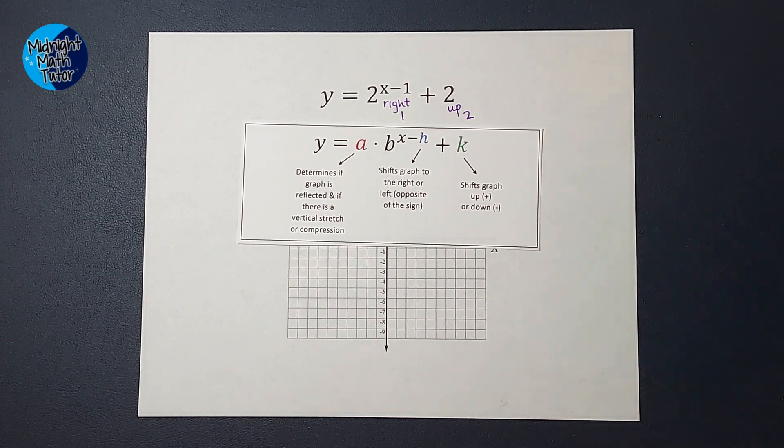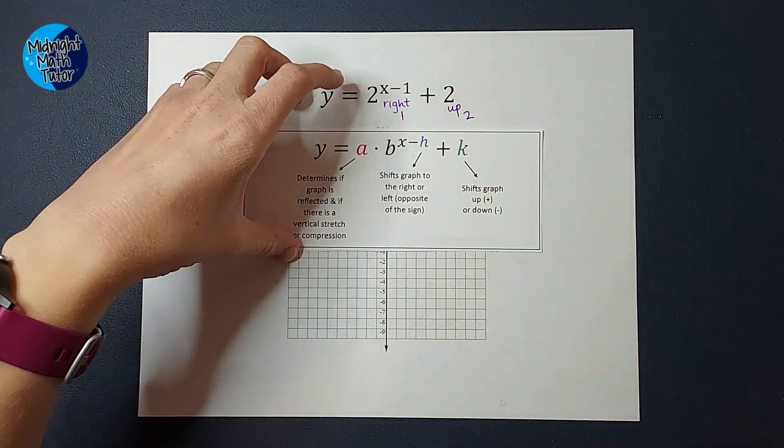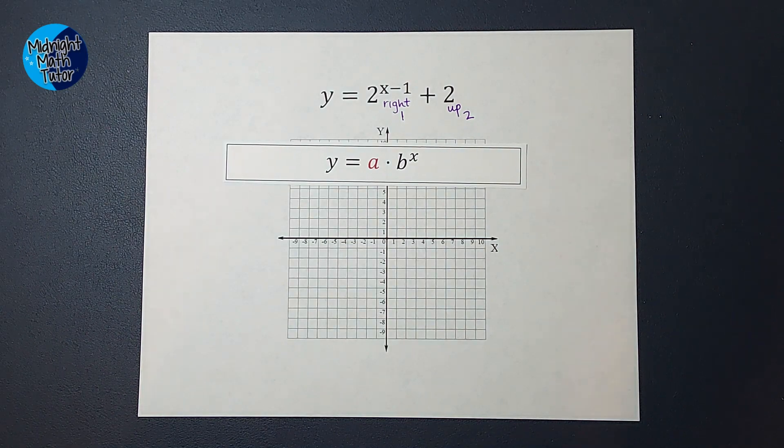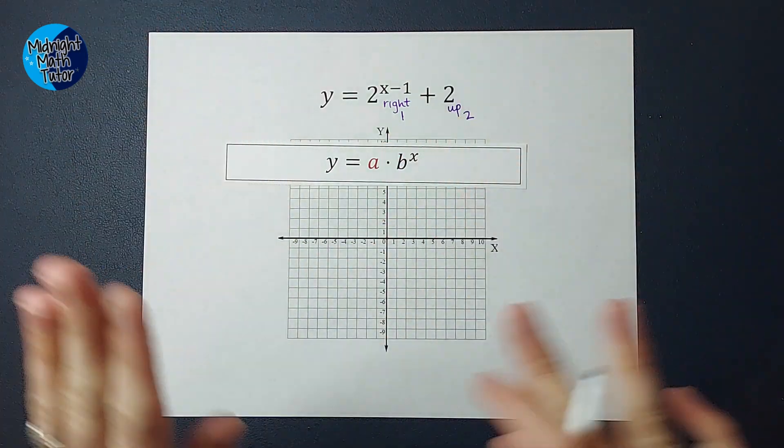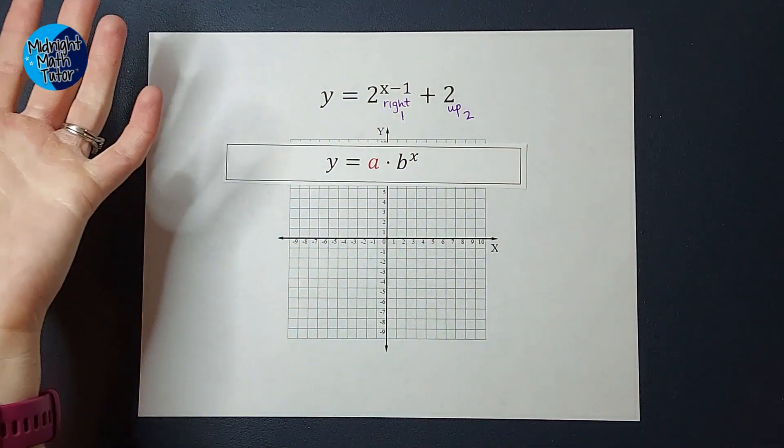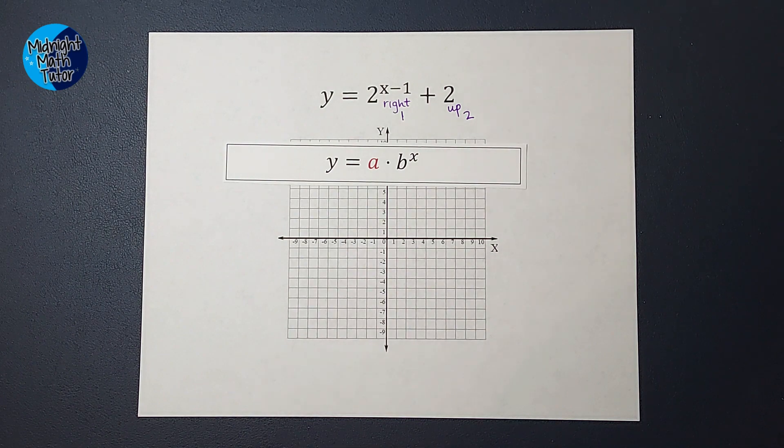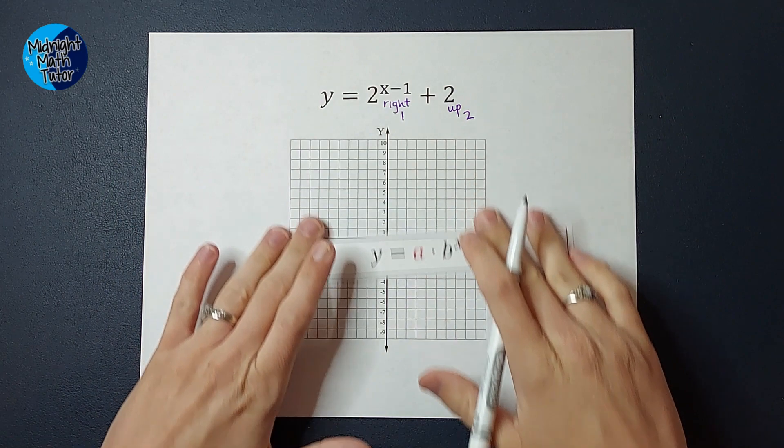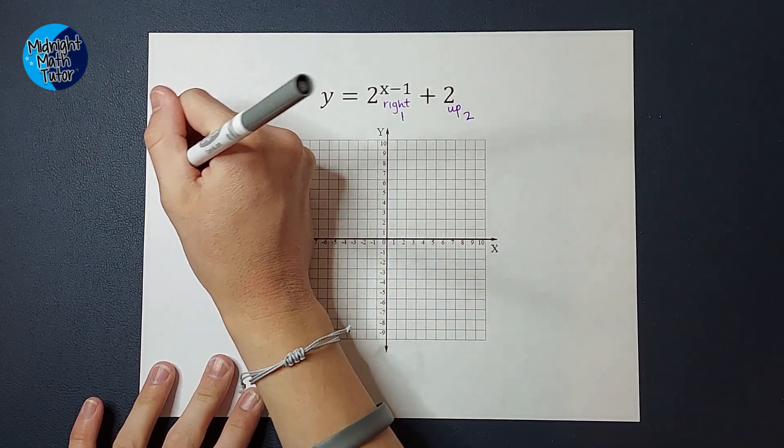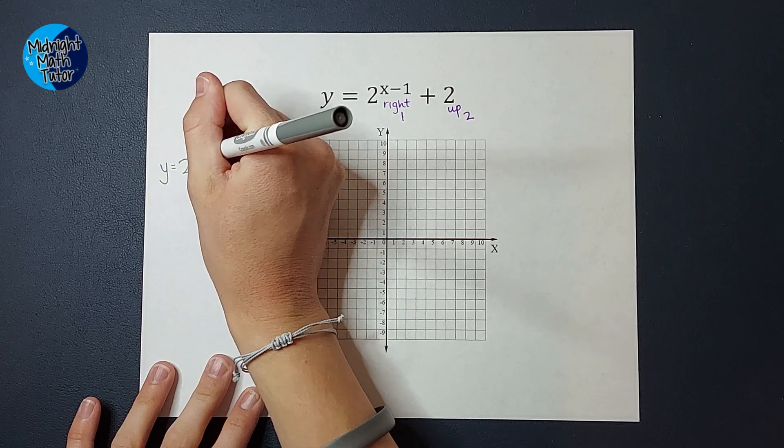Now with math, there's almost always more than one way to do things. The way we're going to do this is we are going to use y equals a times b to the power of x for my parent graph. If you're like, what the heck is she talking about, just stick around and I will show you. So in this case, we don't have a number being multiplied out front. So my parent graph is going to be y equals 2 to the power of x. This is my parent graph, y equals 2 to the power of x.